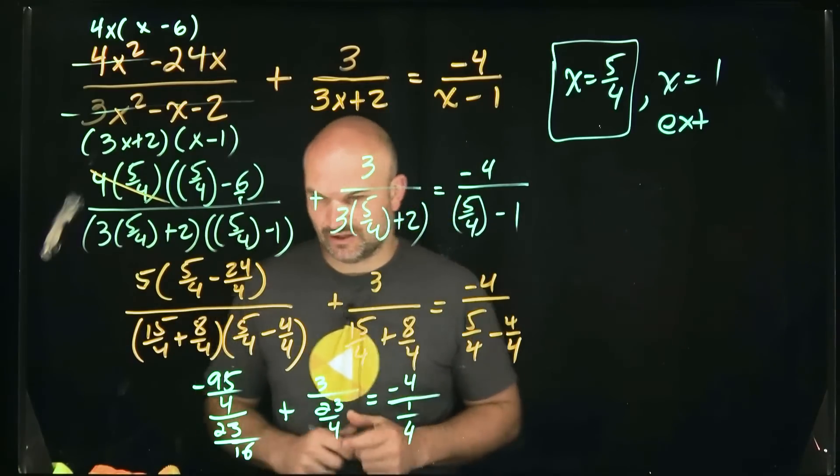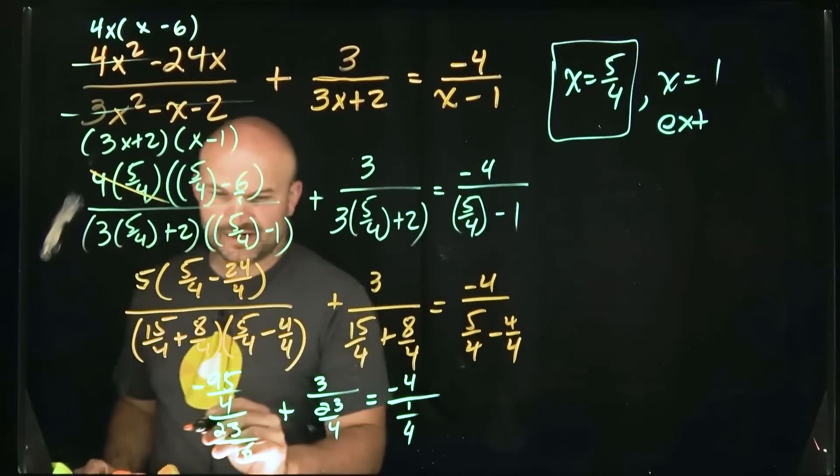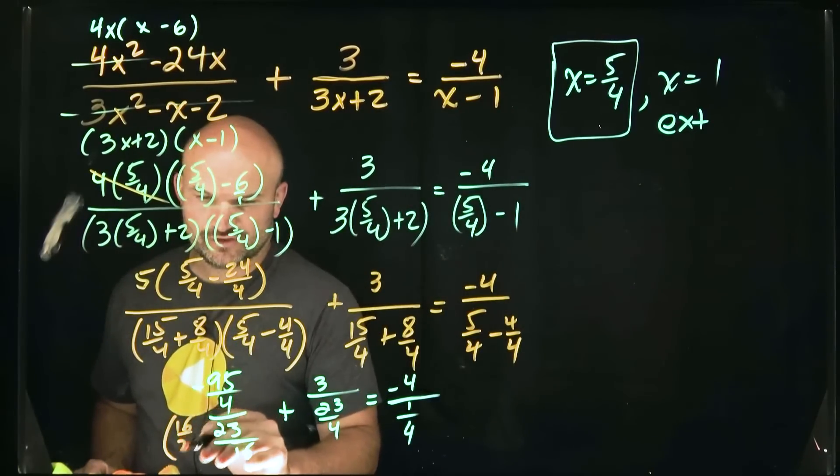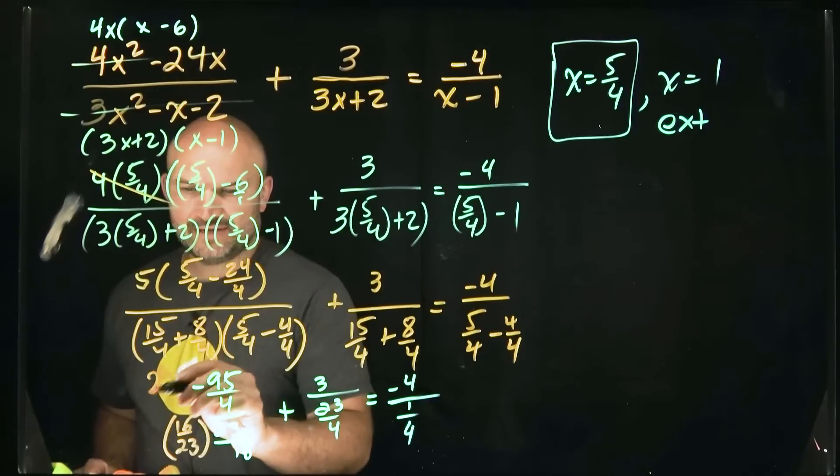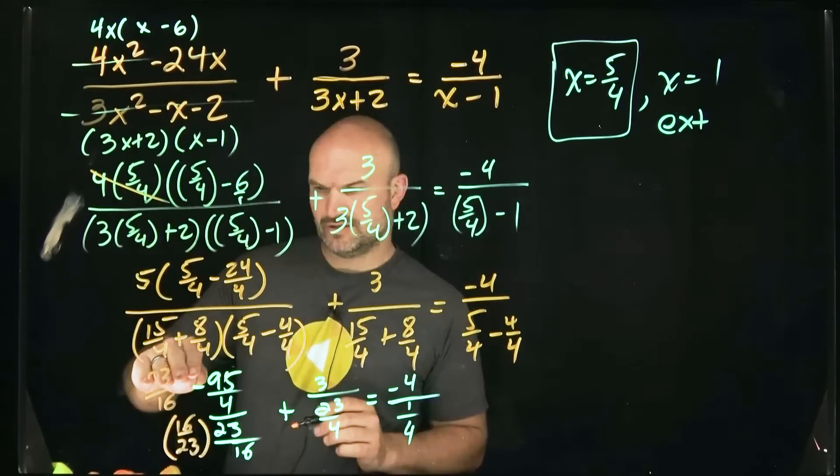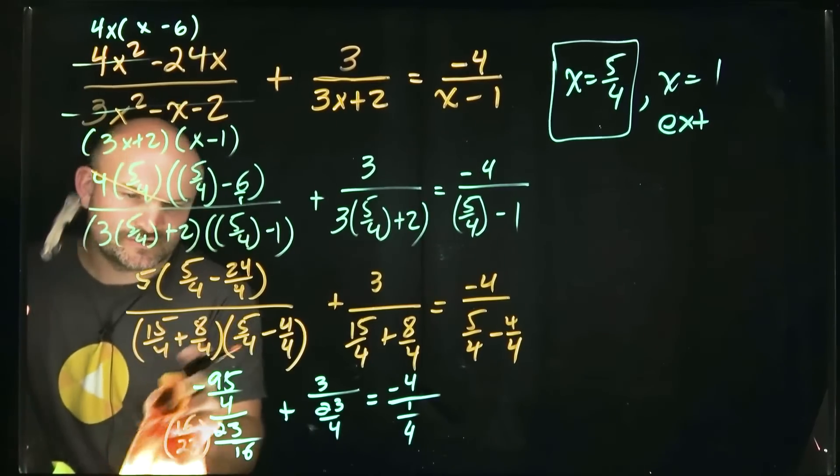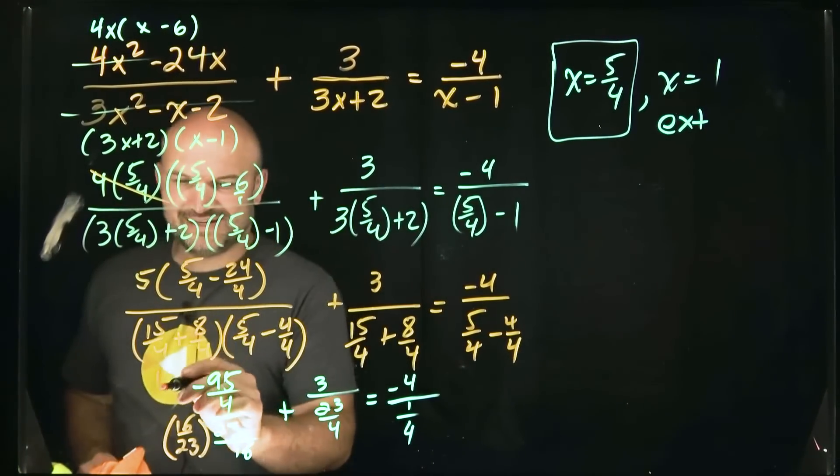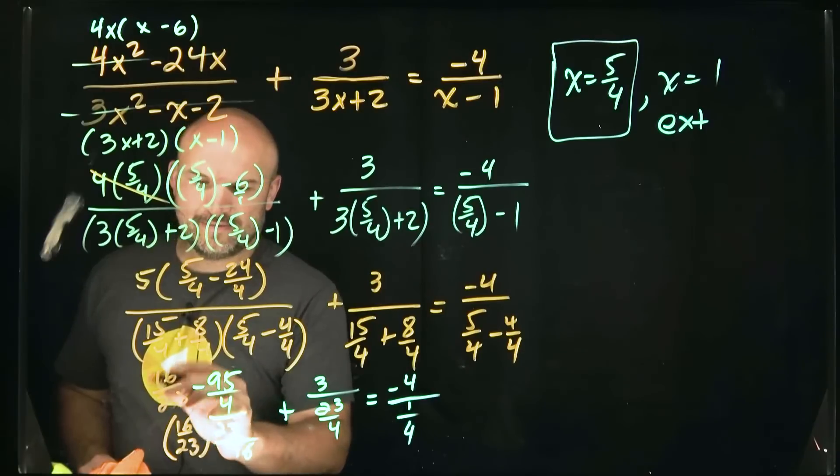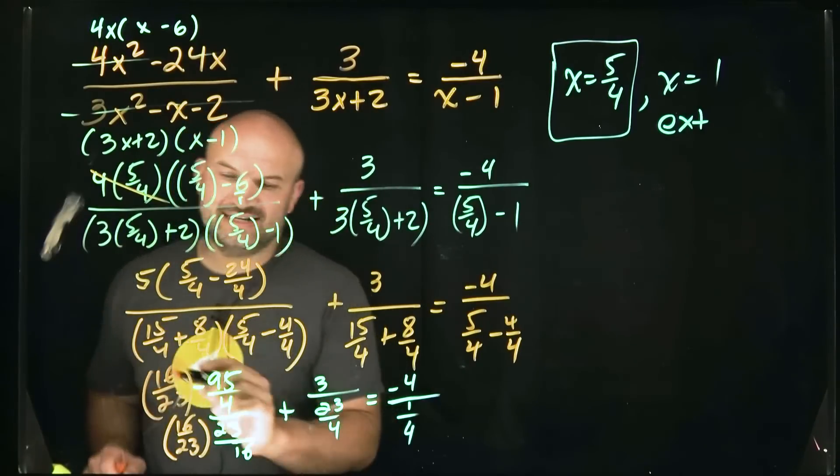So now what we need to look at is how can I simplify this? Over here, I can multiply this by 16 over 23 in my denominator, and then also do that on the top. So that's going to be, sorry, why did I not, why did I flip it again? That's so crazy. You're supposed to keep that the same, right? 16 over 23, 16 over 23.